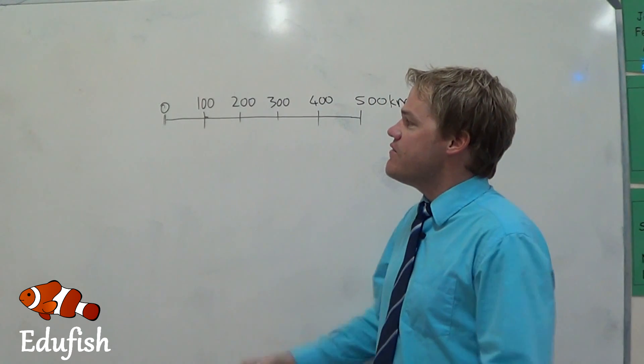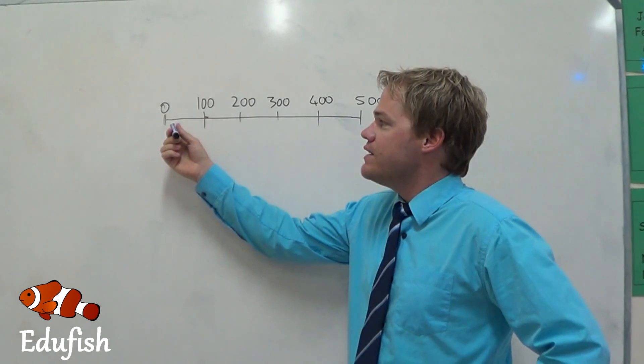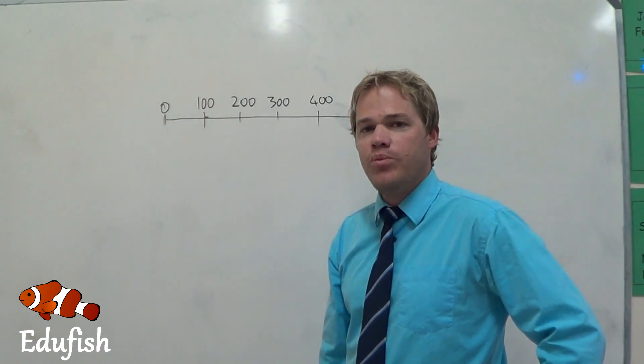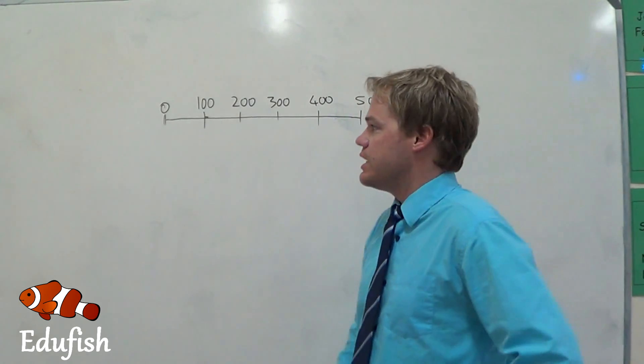Now, what this scale tells you is that from here to here on your map is 100 kilometers. So, even if this is, let's say, 1 centimeter on your map, then in real life, it would be 100 kilometers.